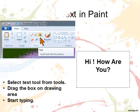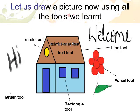Click on the text tool, which has the symbol 'A', from the tool box. The pointer changes into a plus sign. Click and drag the pointer on the drawing area where you want to place the text. A dotted rectangular box will appear with a blinking cursor inside it. Type the text as shown in the text box. Now let us draw a beautiful picture by using all the tools we have learned.